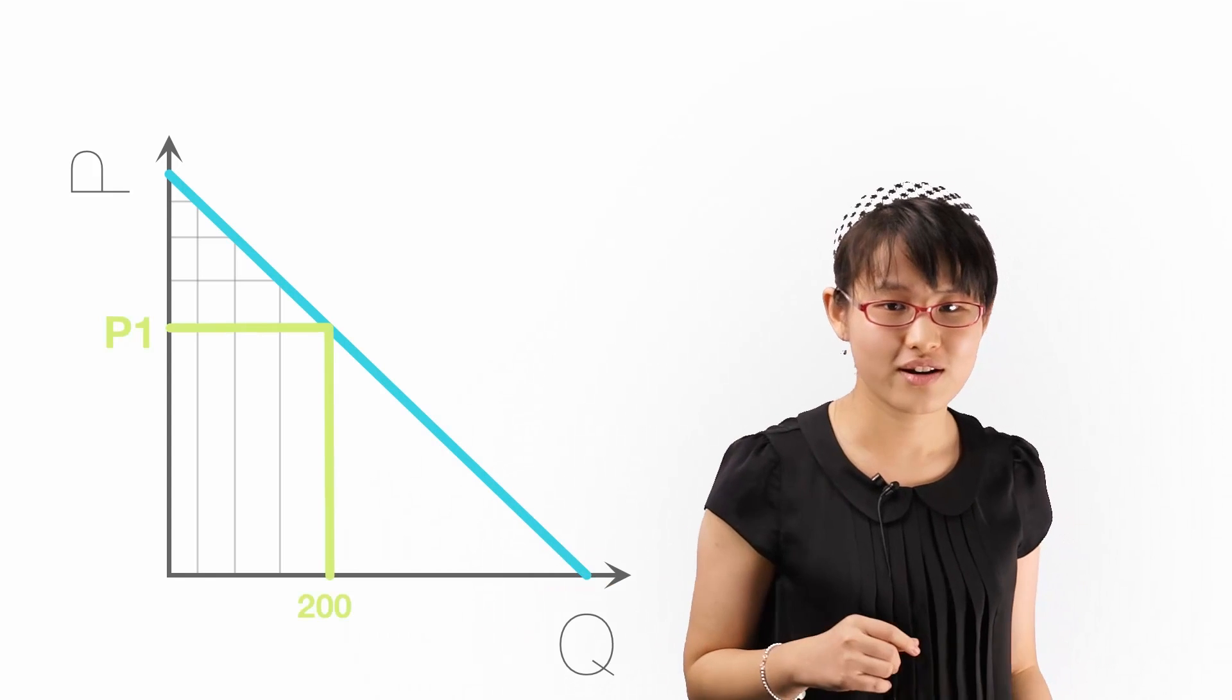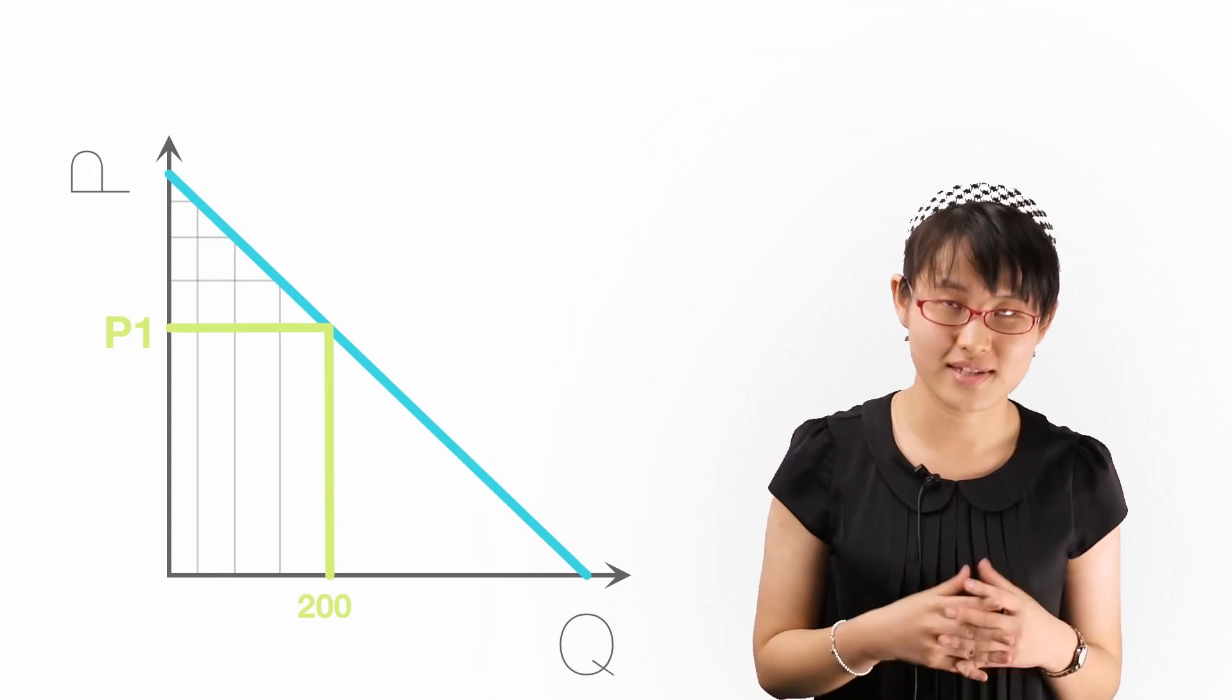At price equals P1, I am selling 200 goods. What do I do if I want to sell 201 goods?